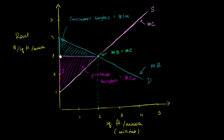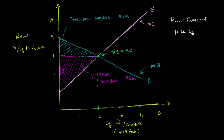Now, this equilibrium rent of $3 per square foot per month is actually quite a lot. For a 1,000 square foot apartment — a 2-bedroom, 2-bath — you're going to be paying $3,000 per month. That's the type of rent you might pay in a city like San Francisco. And let's say people start complaining about it, and the government says that rent is too high and wants to introduce some type of price control — rent control. Let's say the city sets a ceiling on the price per square foot per month, a price ceiling of $2 per square foot per month.